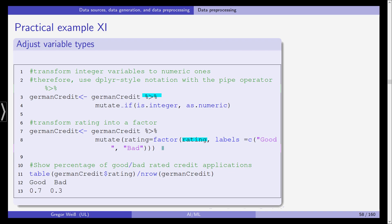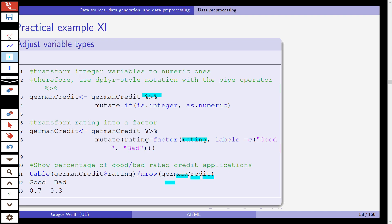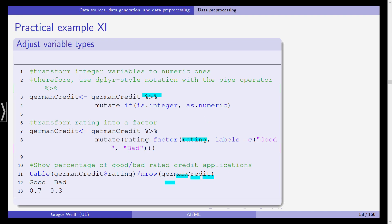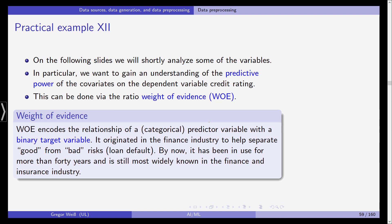Last but not least, we show the percentage of good and bad rated credit applications. We do a table of GermanCredit dollar rating, which is the rating column, divided by nrow, the number of rows in GermanCredit. This is 1000, but if we don't know this, simply calculate the number of rows using the nrow command. As you can see, we have 70% good credits and 30% bad loans. On the next slides and in the next video, we will continue this data preprocessing and data manipulation analysis.